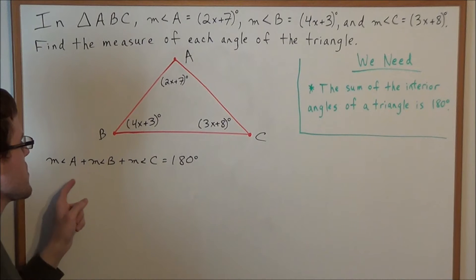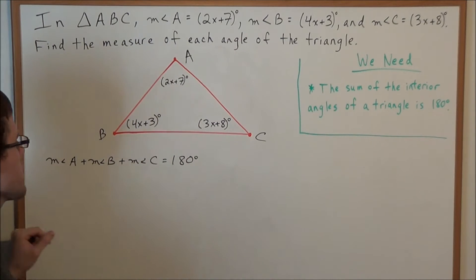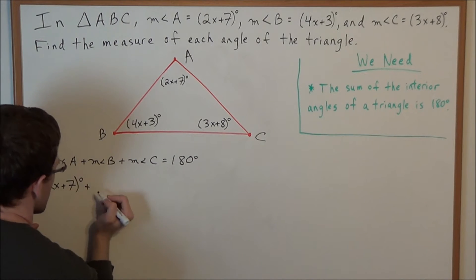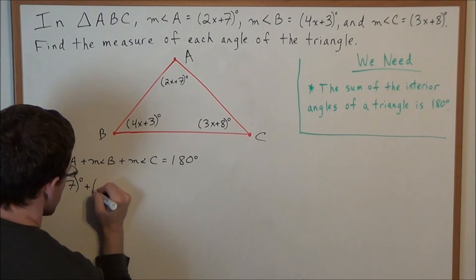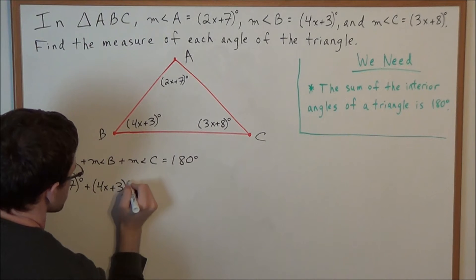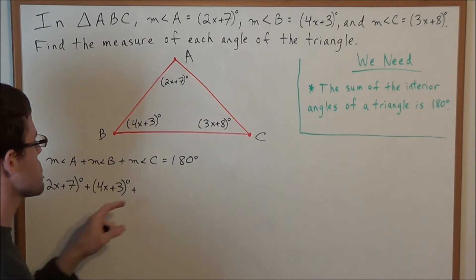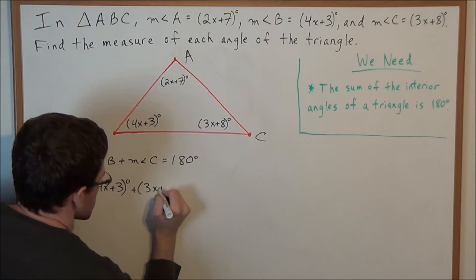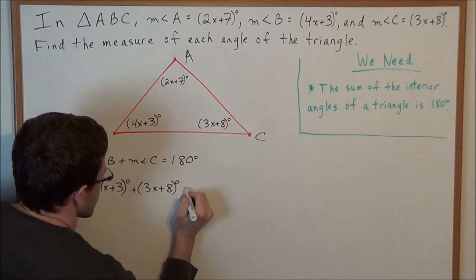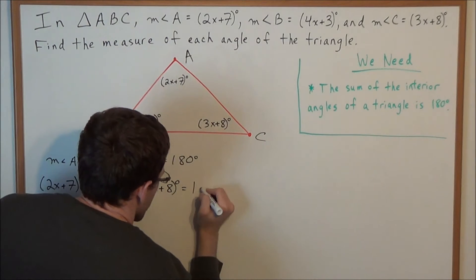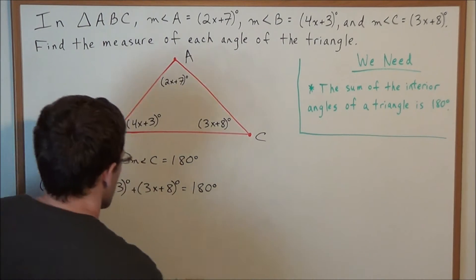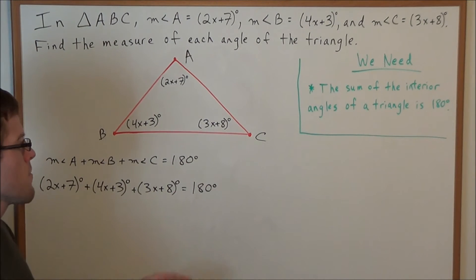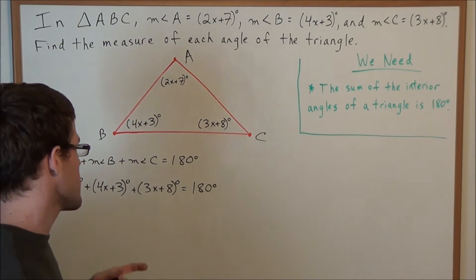Now we substitute for each of these angles. The measure of angle A is 2x plus 7 degrees, the measure of angle B is 4x plus 3 degrees, and the measure of angle C is 3x plus 8 degrees. When we add all of this together it equals 180 degrees. In order to find the measure of each angle, we need to solve for x — we're solving for the variable x, not x degrees.